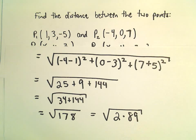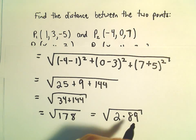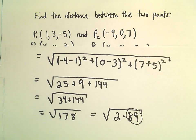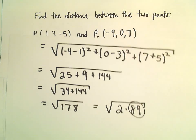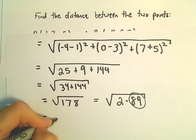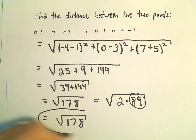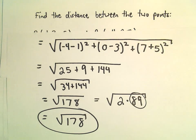3 certainly doesn't go into it. What else might go into it? 7 definitely doesn't. So 89 to me looks like it's prime. It's not going to factor anymore. We can't really take the square root of either of those two numbers. So I would simply say that the distance is the square root of 178.